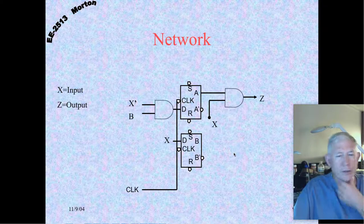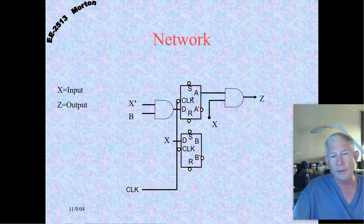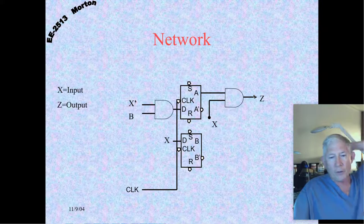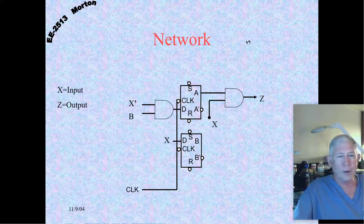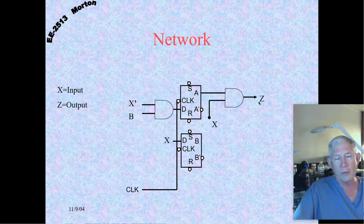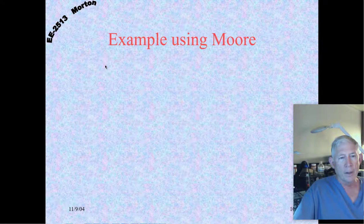Here's our network — this is what the circuit looks like. We have the X'B term going into DA, and DB is just X, and the output is XA. That's all there is to it. Pretty straightforward. If you built this with a clock synchronizing input X, anytime you put in a 1-0-1 sequence, Z should light up, and all the rest of the time Z should be zero.